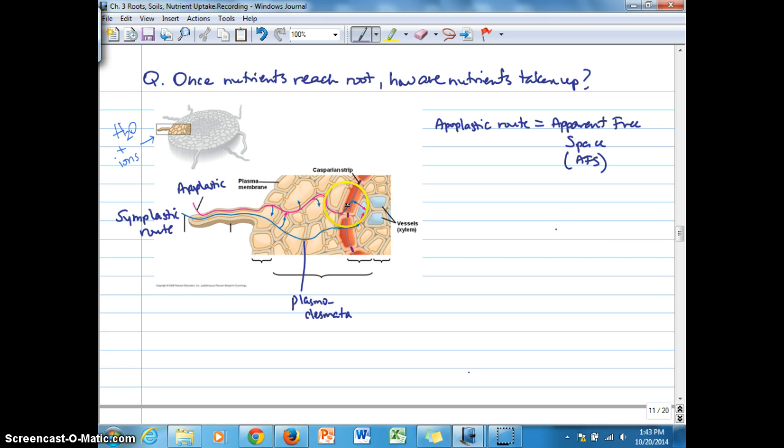The Suberin strip penetrates the cell wall and attaches to the cell membrane of these endodermis cells, forcing the nutrients across a plasma membrane. Transport across a membrane is a topic we'll discuss, but that has to happen at that point if it hasn't happened earlier along any part of that apoplastic route.